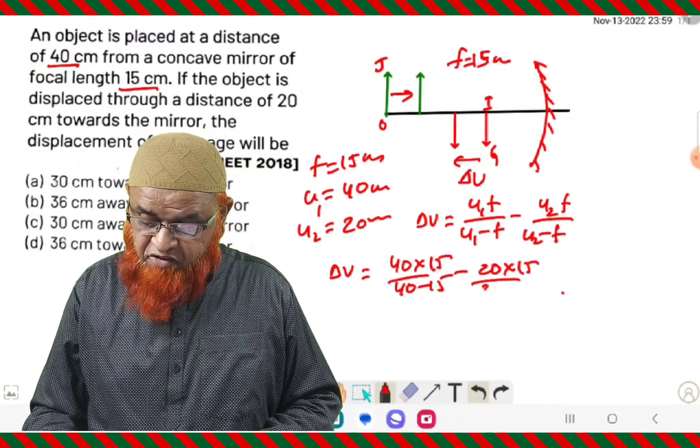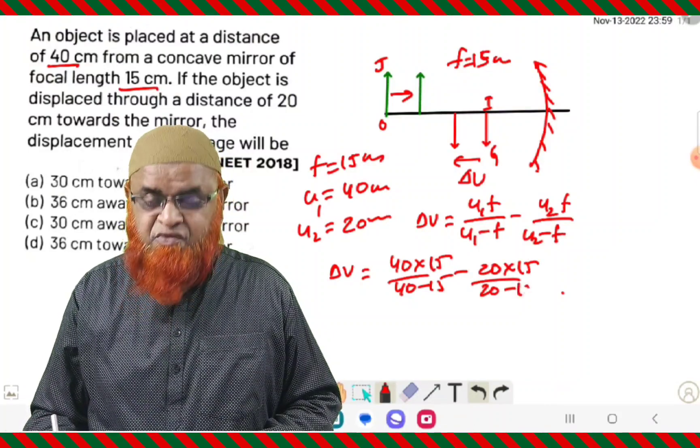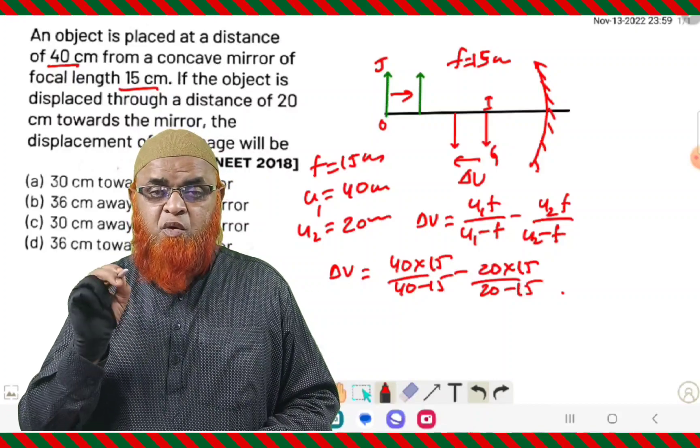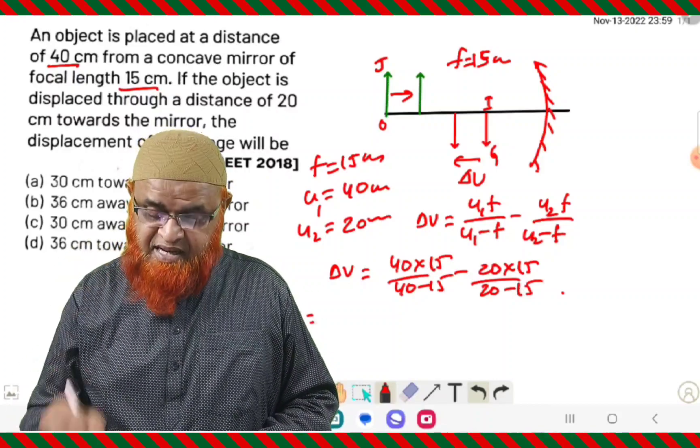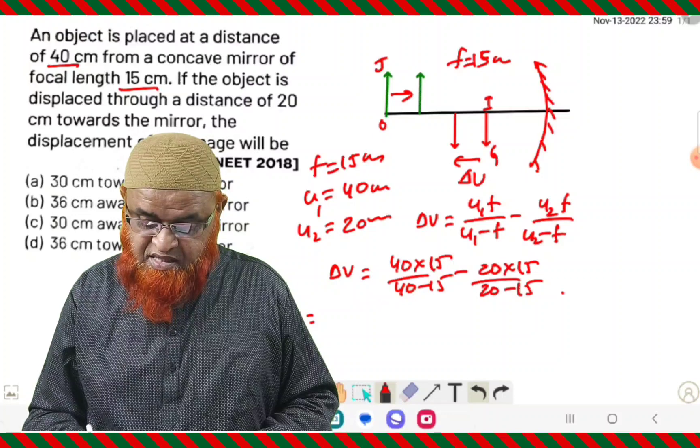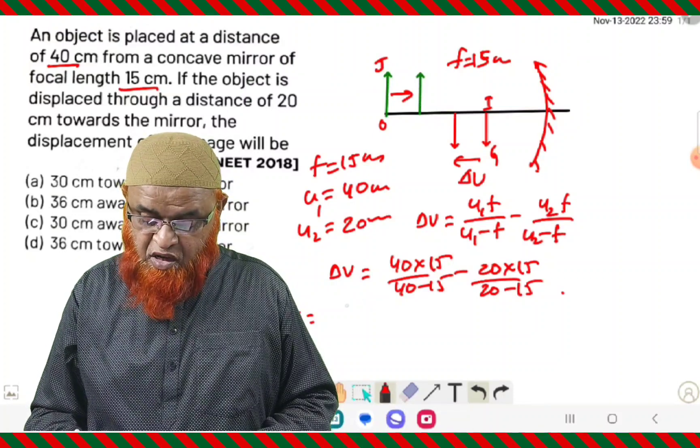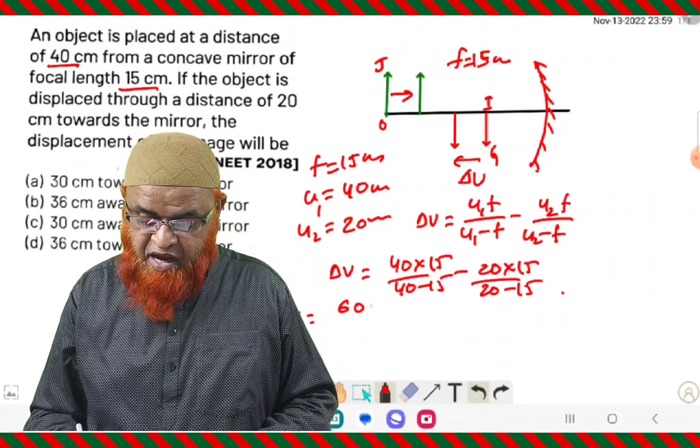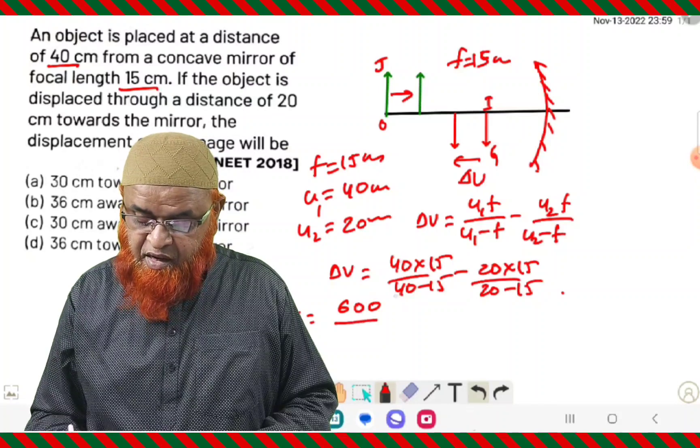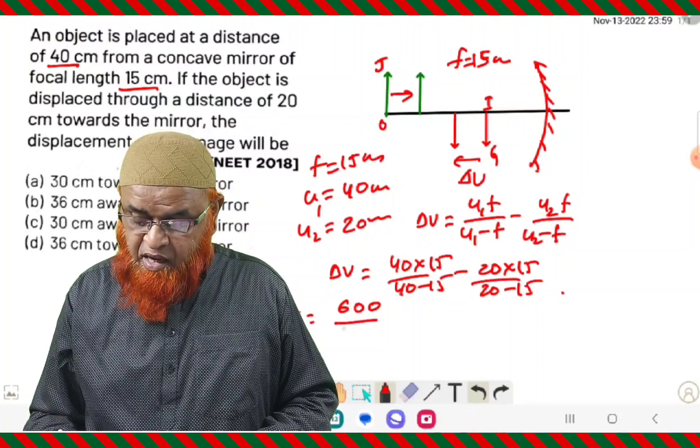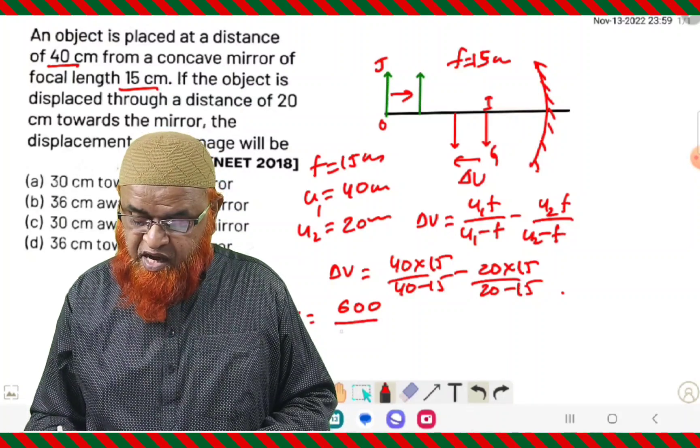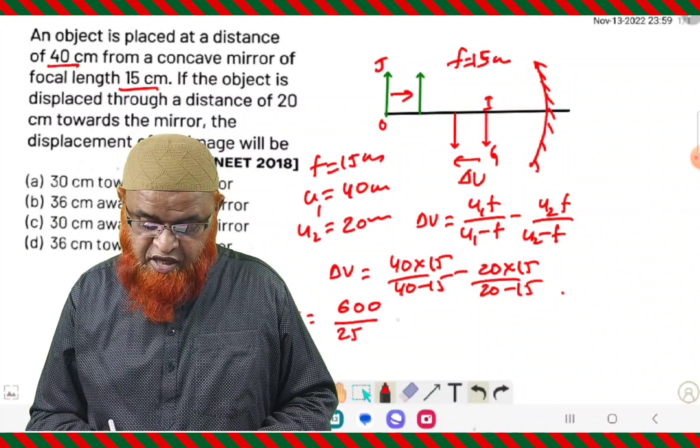By using this shortcut formula you will get an answer directly. By substituting the values, Delta V equals U1 is 40, 40 into 15 by 40 minus 15, minus 20 into 15 by 20 minus 15.